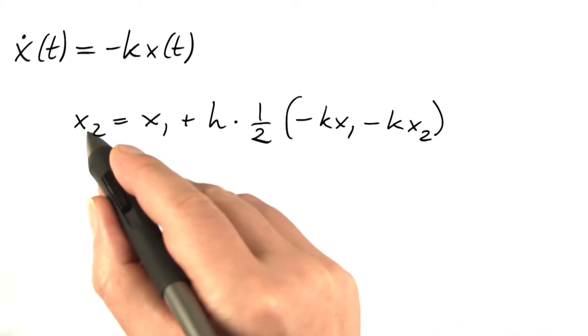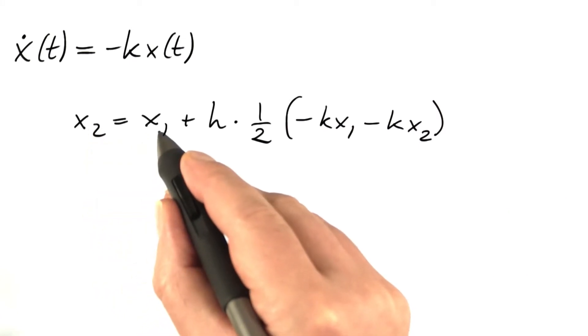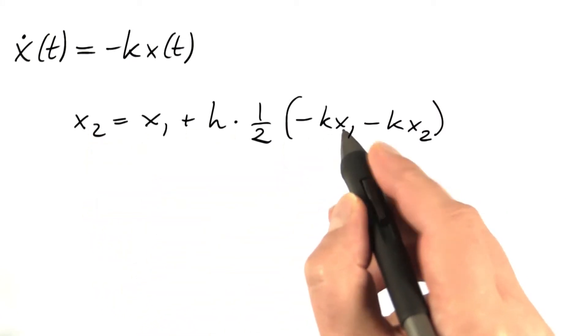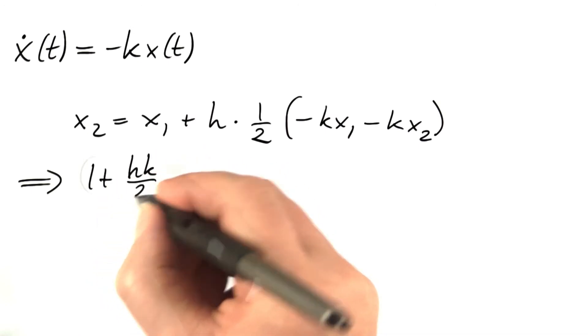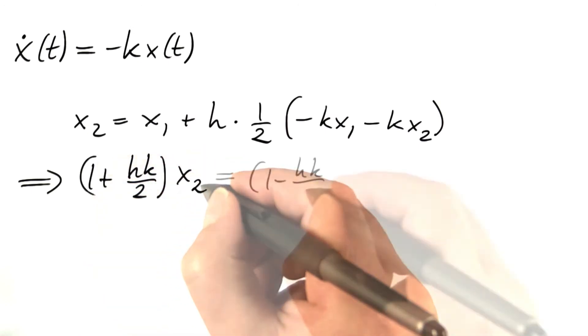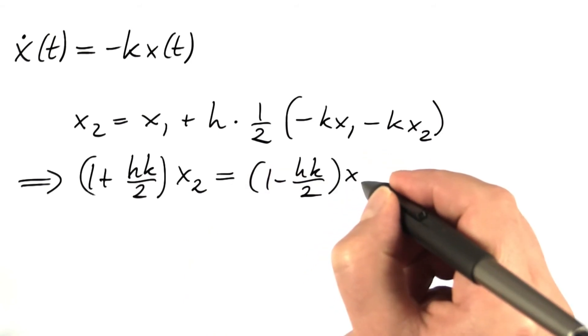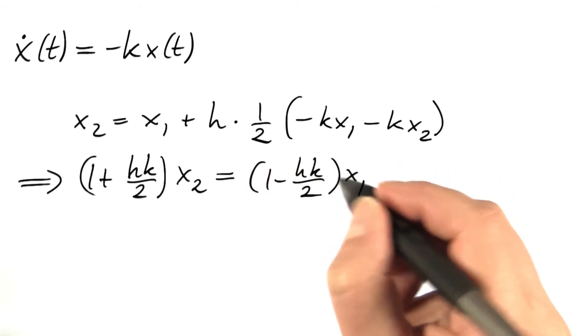I bring the x2 to the left-hand side and combine this x1 with that x1 and get 1 plus hk over 2 times x2 equals 1 minus hk over 2 times x1.